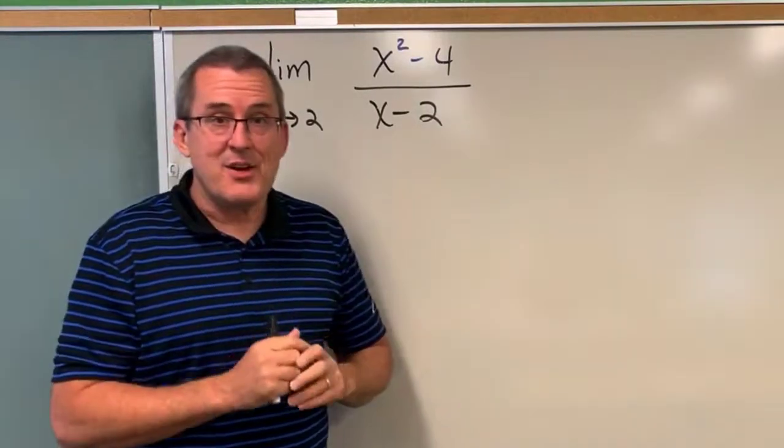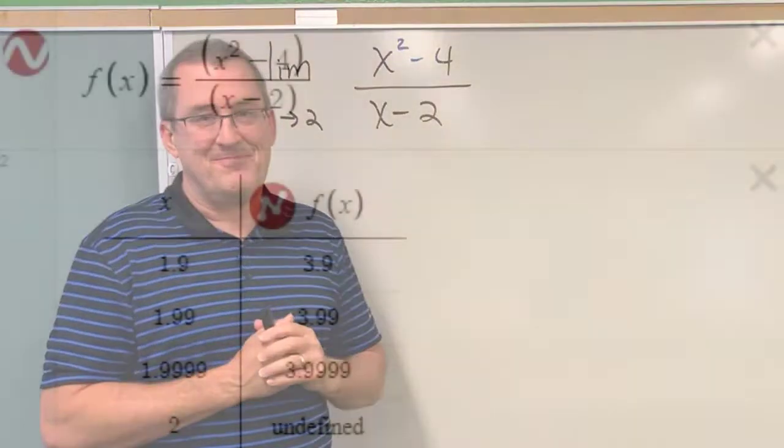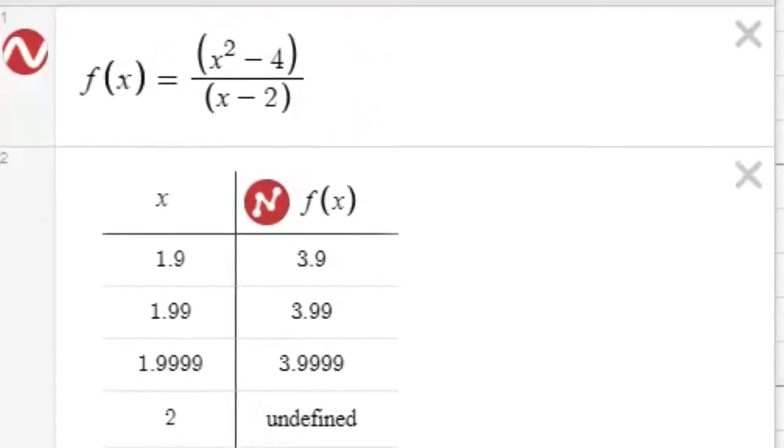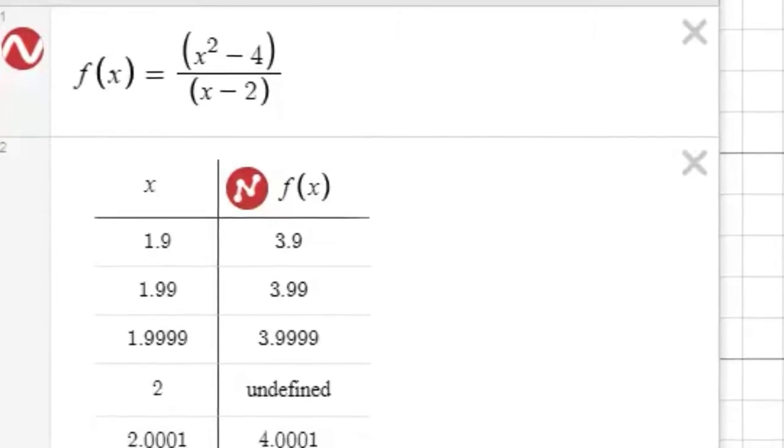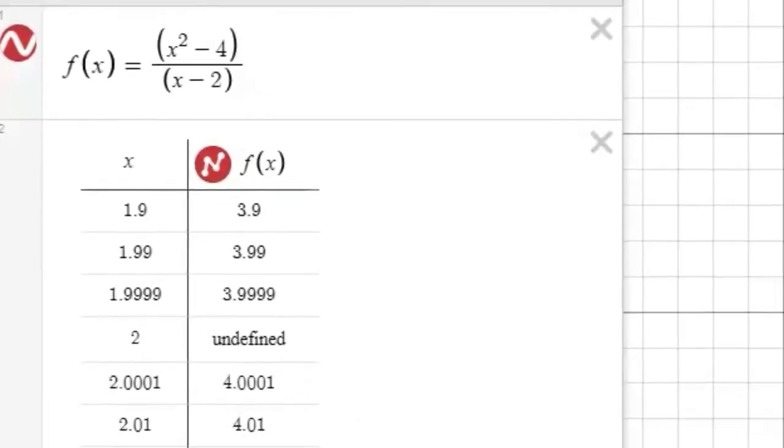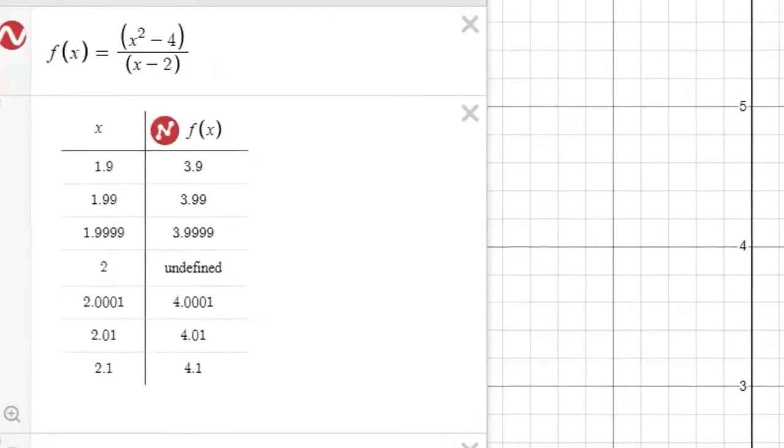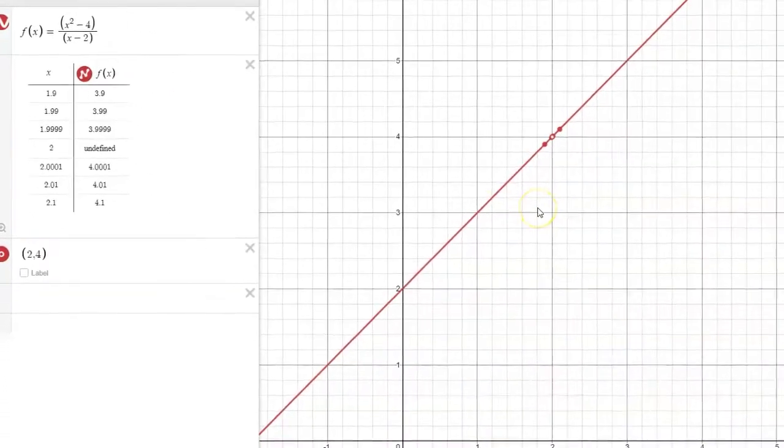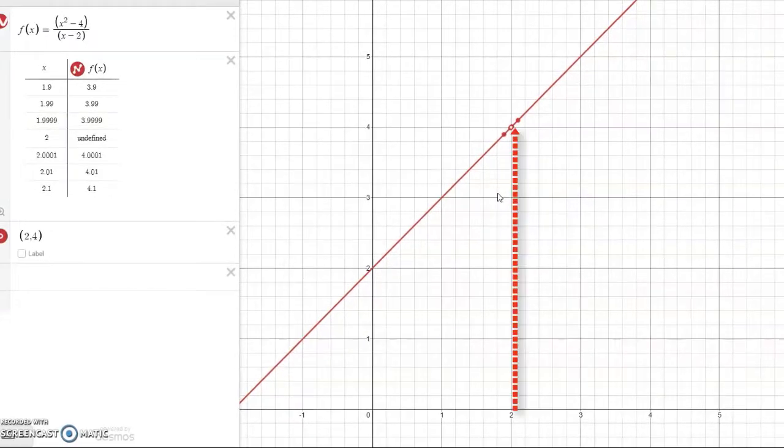And to do that we're going to use technology. So we've been examining this rational function to see what happens to the output quantities as the input quantities near the value of 2 but are not equal to 2. So we're going to look at this both graphically and with the table of values and see if we can better understand what's happening to this function when x is nearby 2.